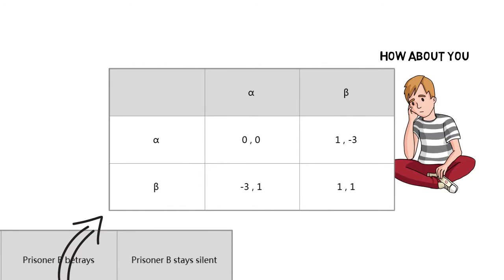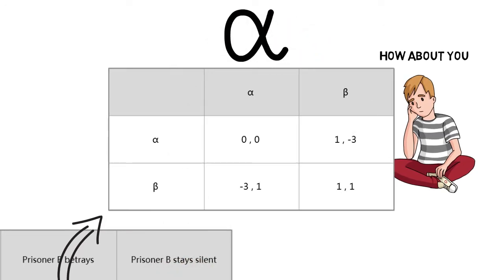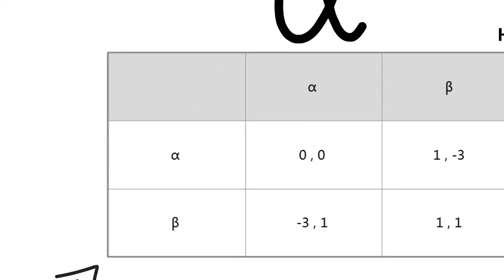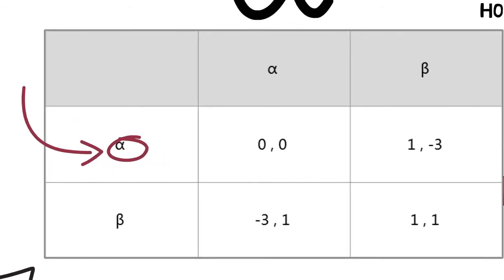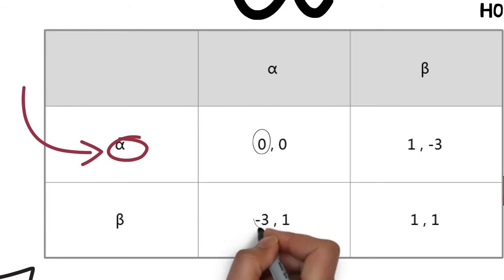It seems the two strategies without a better choice. Actually, we should choose alpha because it's a dominant strategy. If we think carefully, we can find if we choose alpha, no matter what the other person's choice, we always get a better result. For example, A chooses alpha. If B chooses alpha, A gets zero.